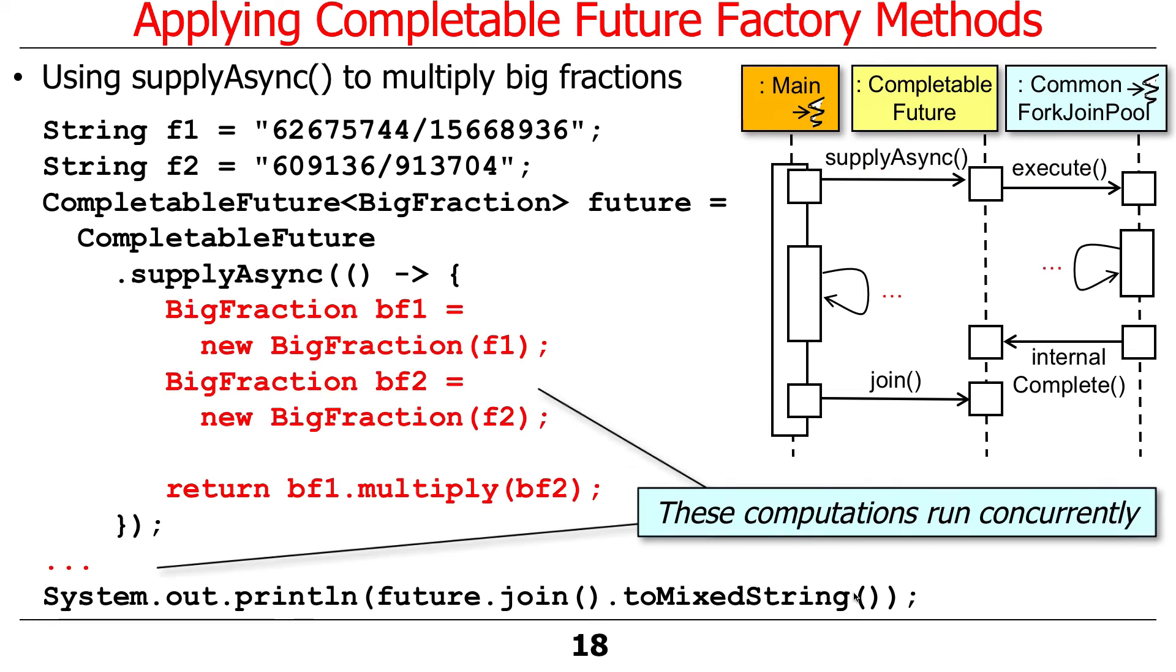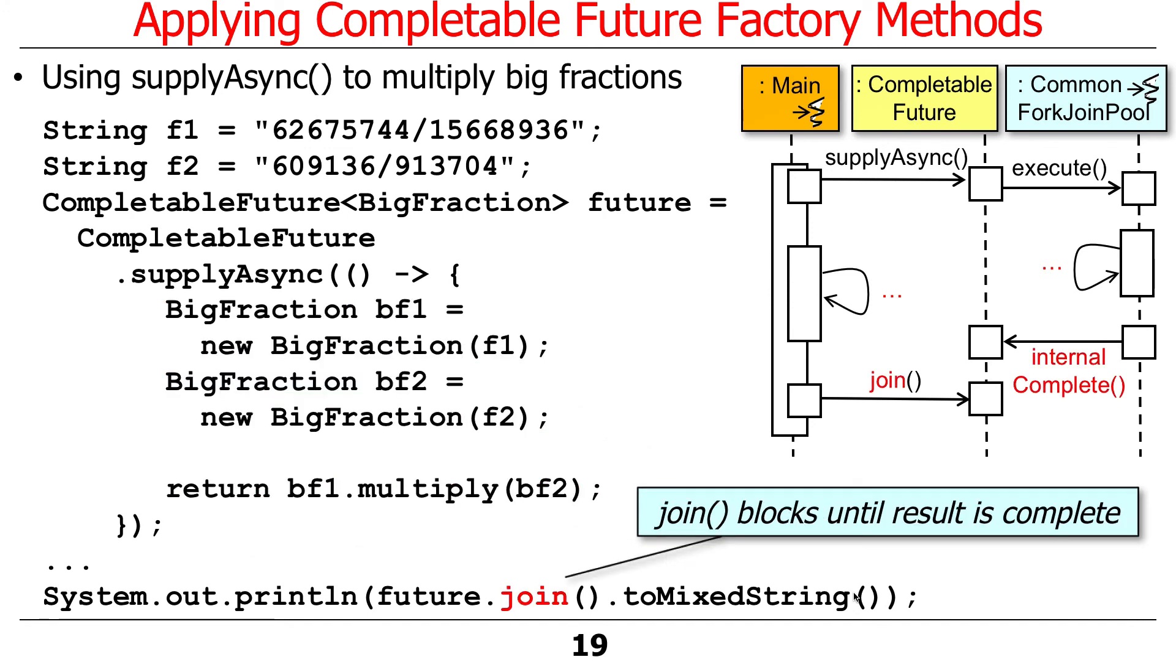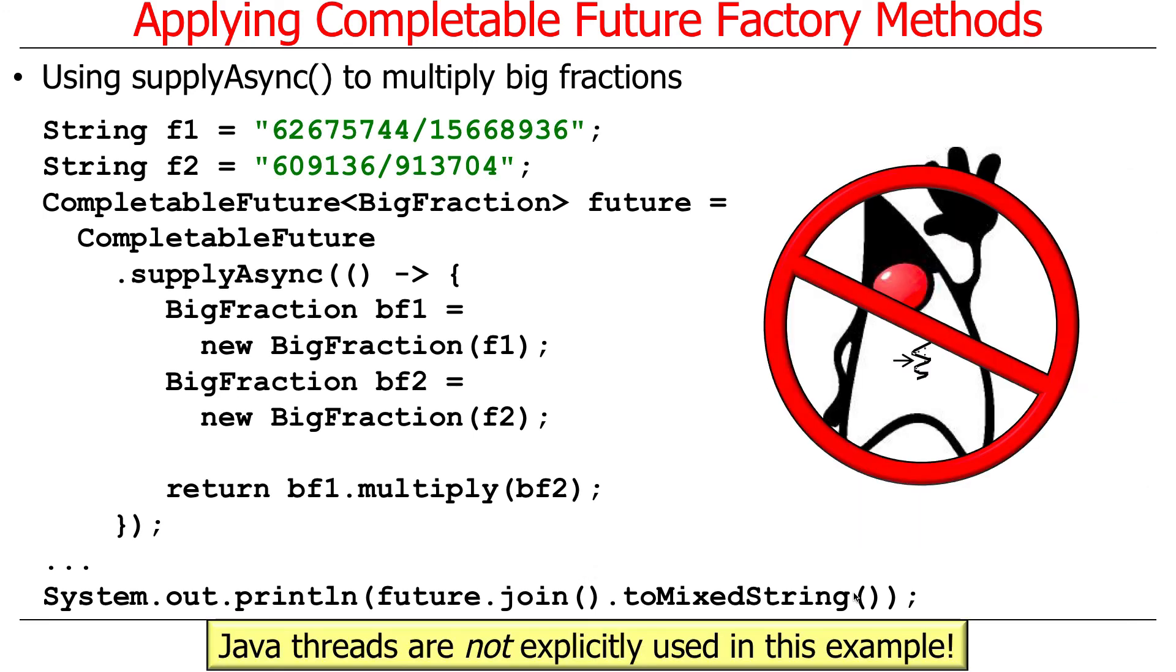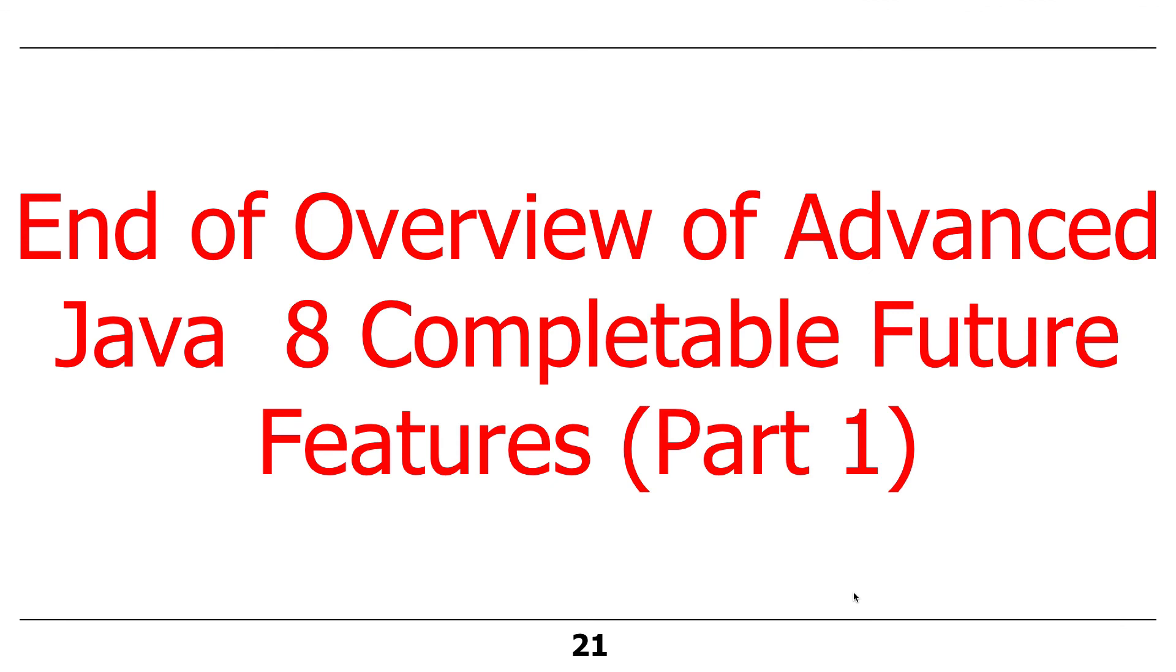And that then runs. These computations run concurrently with whatever those computations are, and we block until the thing is done. Notice how there's no threads used in this example at all. It's being done implicitly by having this lambda expression given by supply async, the factory method, which takes the lambda expression and queues it up to run in a task in the fork-join pool, which eventually runs on a thread. But we don't have to explicitly program the Java thread.